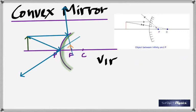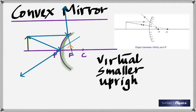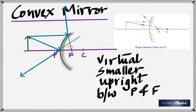The properties of the convex mirror image: it's virtual, upright, smaller than the object (diminished), and always between P and F.